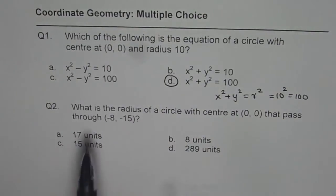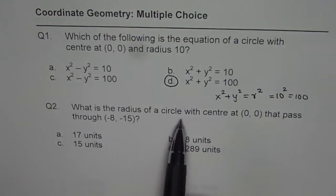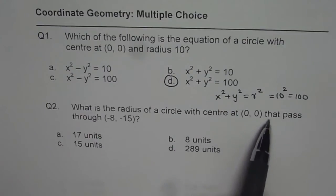Question 2. What is the radius of the circle with center 0, 0 that passes through this point? So that is the distance formula we are looking for.